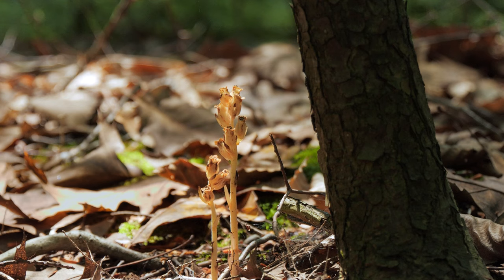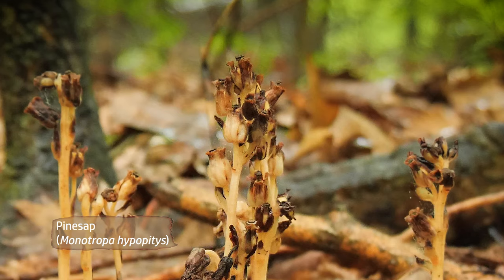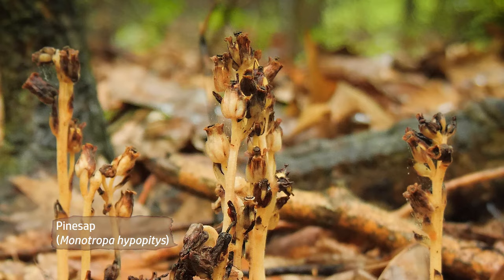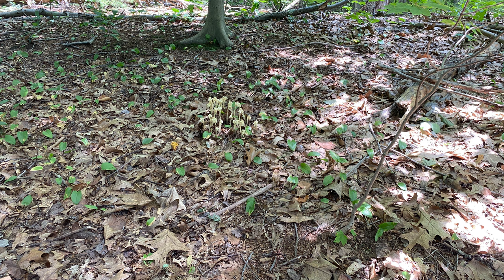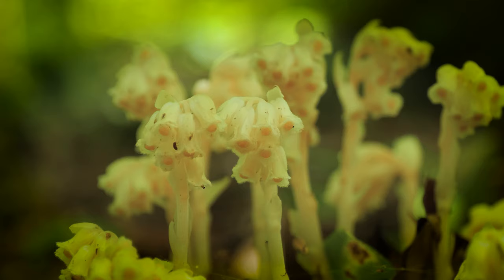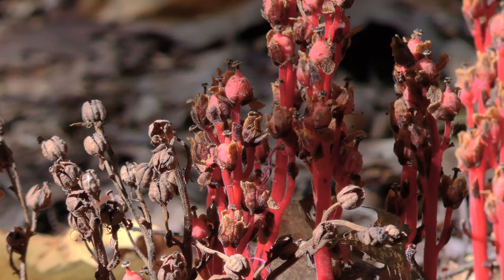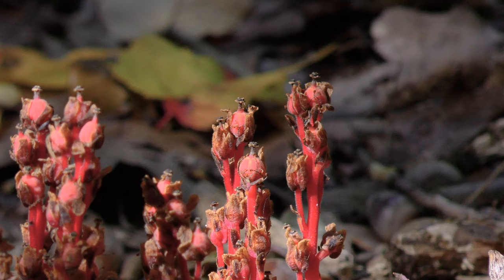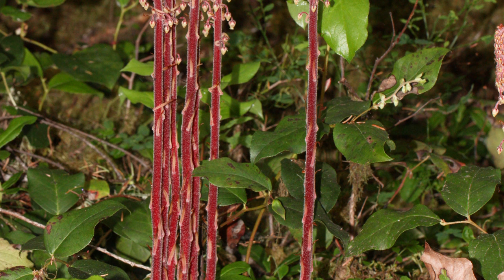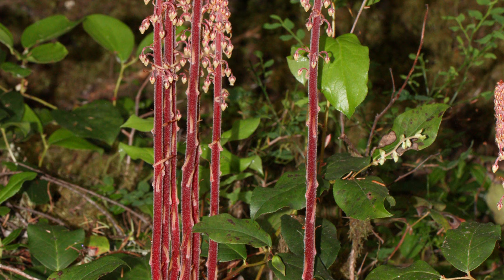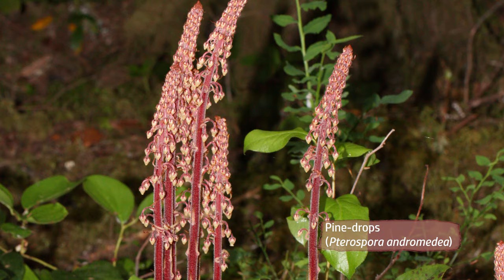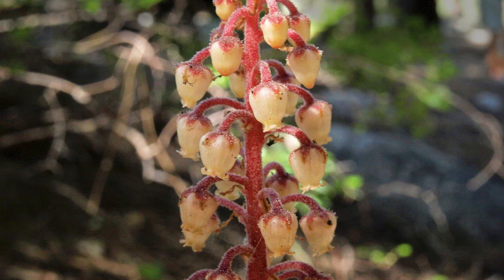A related plant is pine sap. It looks nearly identical to Indian pipe, but has more than one flower on a stalk, and is usually not ghostly white. Some are creamy yellow. There is a bright red variant known as hairy pine sap. There are rare occurrences in New England of this beautiful plant, pine drops, which is more of a western U.S. plant. It has been found in New Hampshire and Vermont, and recently the first occurrence in western Massachusetts was found.